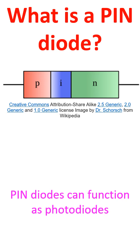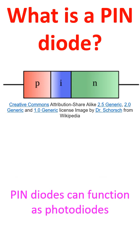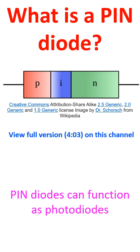Because of the wide intrinsic region, a PIN diode has a low capacitance when reverse biased. The depletion region without charge carriers is in the wide intrinsic region and is larger than in a standard PN diode. This increases the volume where electron-hole pairs can be produced by an incident photon. That is how PIN diodes can function as photodiodes.